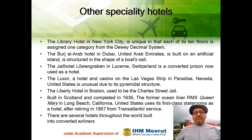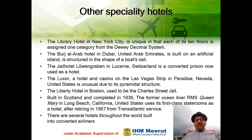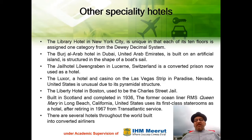The Library Hotel in New York City is unique in that each of its 10 floors is assigned one category from the Dewey Decimal System. The Burj Al Arab Hotel in Dubai is built on an artificial island and is structured in the shape of a boat's sail. The Jail Hotel Lovengraben in Lucerne, Switzerland is a converted prison now used as a hotel.